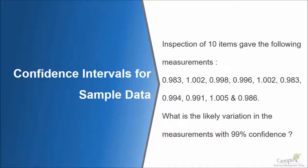Let's take a scenario. Let's say someone inspected ten items and got the following readings. Now, what is the likely variation of these measurements at 99% confidence? So I want to find out what is the confidence limits for 99%. That is the problem on hand.